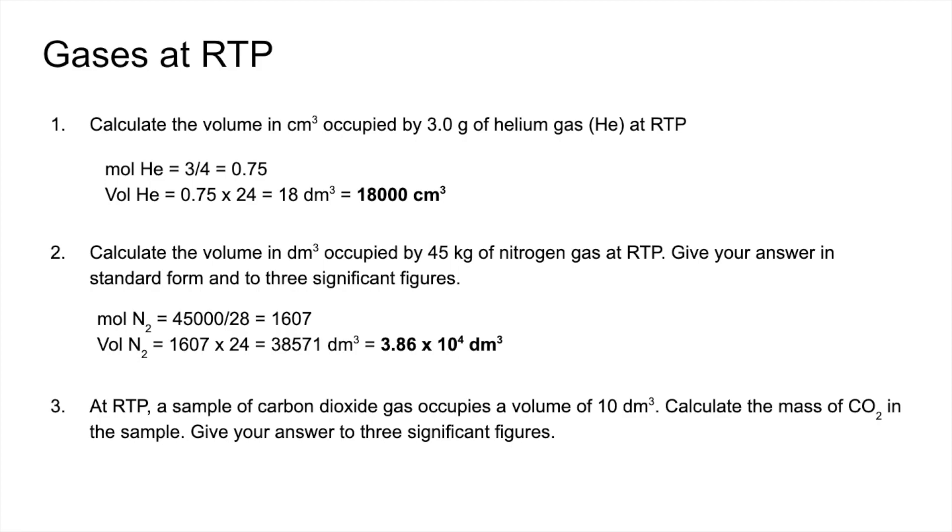And the final one, it's kind of going the other way around so we've got to work out the mass of CO2 this time from a volume at RTP. So to get the moles this time it's volume over 24, so 10 over 24, so there's that many moles of CO2. And then all we need to do is multiply by the MR of 44, which gives us, to three significant figures, 18.3 grams.